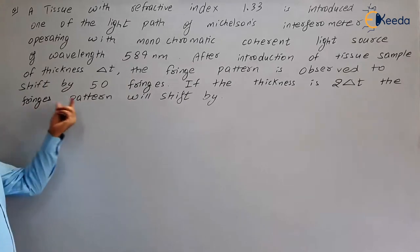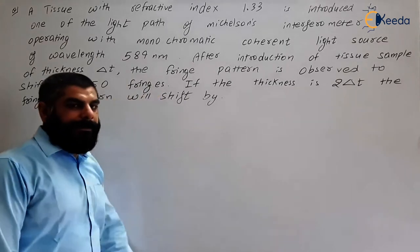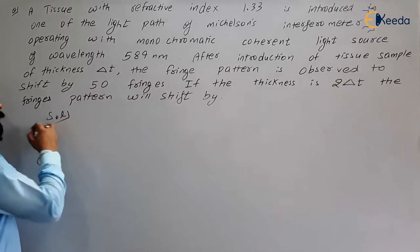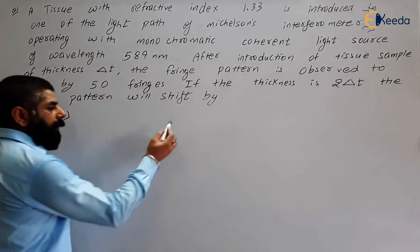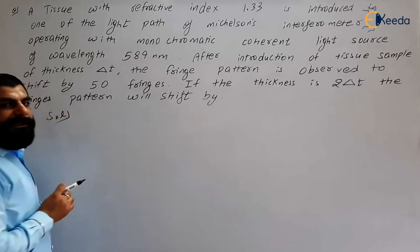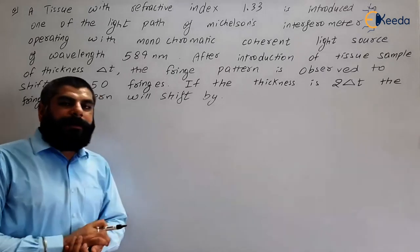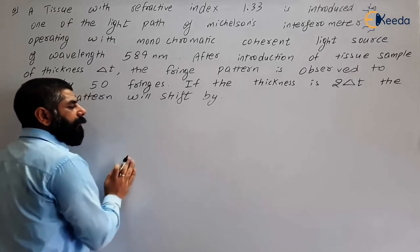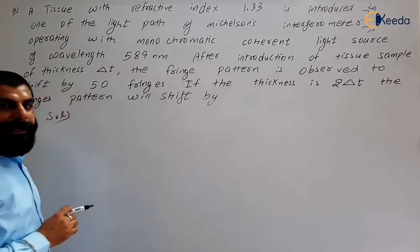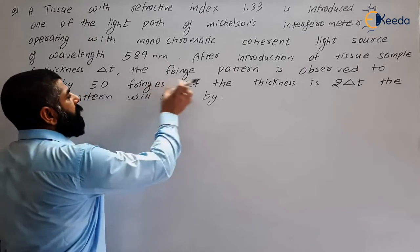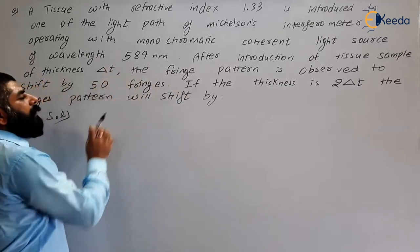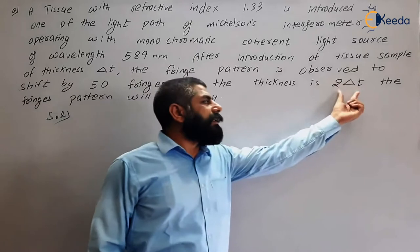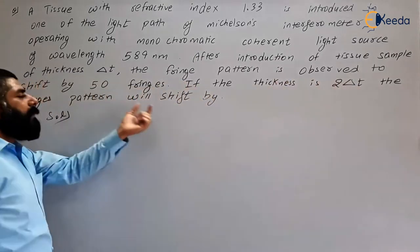The question is: if the thickness of the material placed in the path of the light beam is δt and the fringe shift observed is 50, then if the thickness of that material is 2δt, by how many fringes will the pattern be shifted?